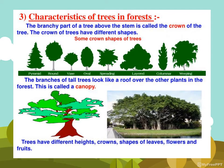Now let's look at the characteristics of trees in a forest. The upper part or top of a tree is called the crown. The branchy part of the tree above the stem is called the crown of the tree. The crown of a tree is not always the same shape — it can be pyramid, round, oval, spreading, weeping, or layered in different shapes.